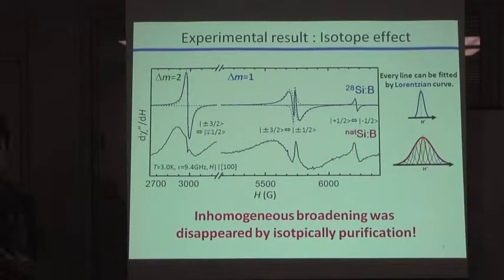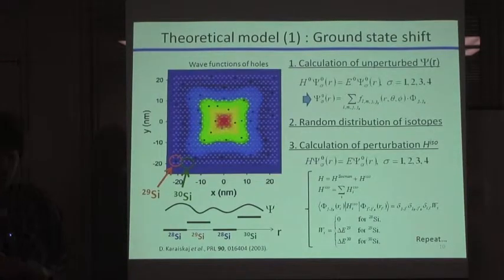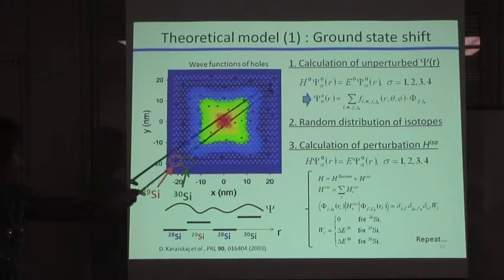And as a next step, we tried to develop a theoretical model to explain this broadening. The basic idea was firstly reported by Karaisukas and his co-workers. So, first of all, we prepared a lot of lattice points in the real space, like this.